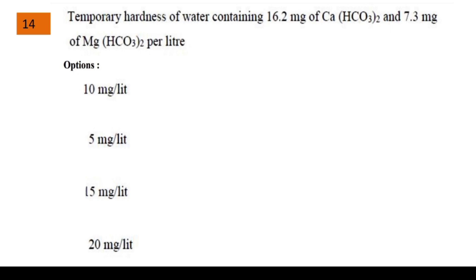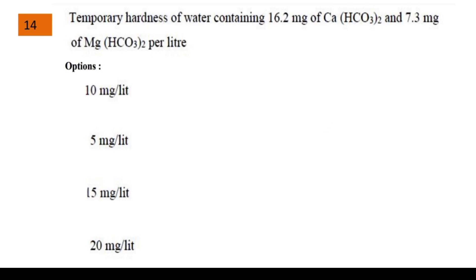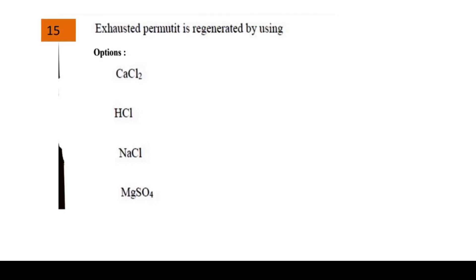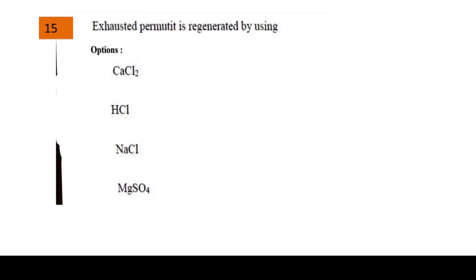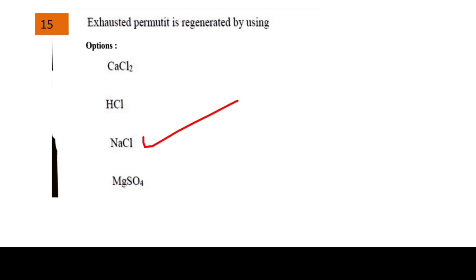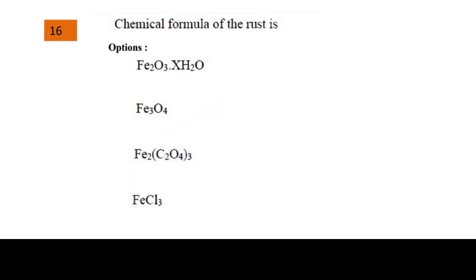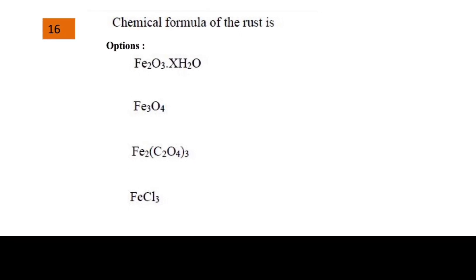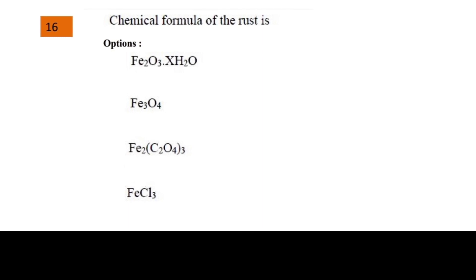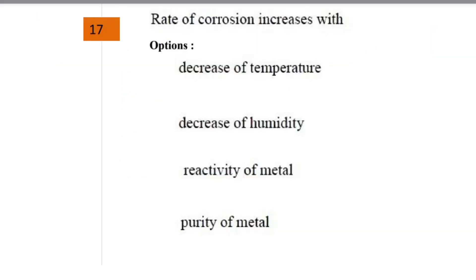Next question: temporary hardness of water containing 16.2 mg of calcium hydrocarbonate and 7.3 mg of magnesium hydrocarbonate per liter. The options were 10, 5, 15, and 20 mg per liter; the answer is 15 mg per liter. Exhausted permutit is regenerated using NaCl (sodium chloride). The chemical formula of rust is Fe2O3·xH2O.